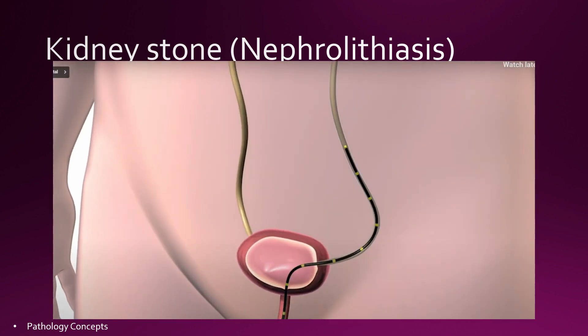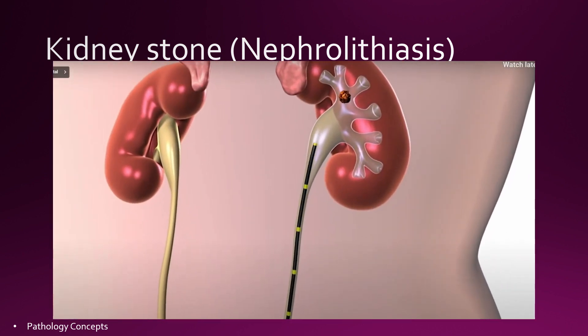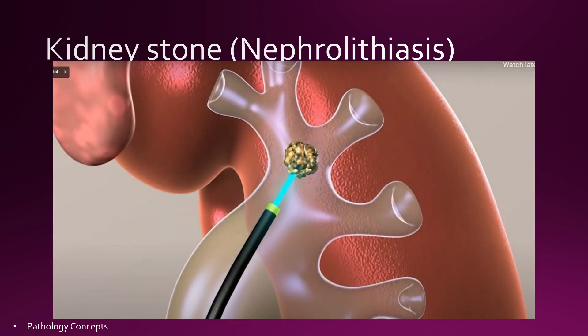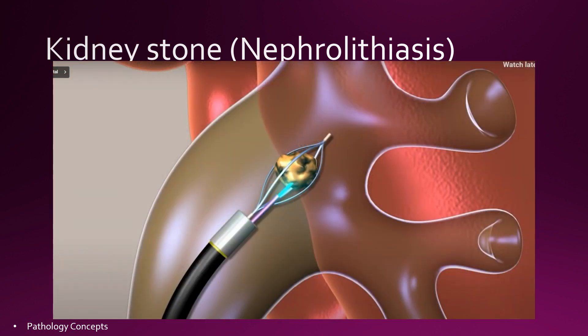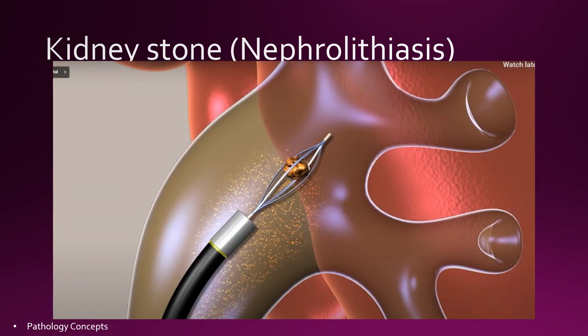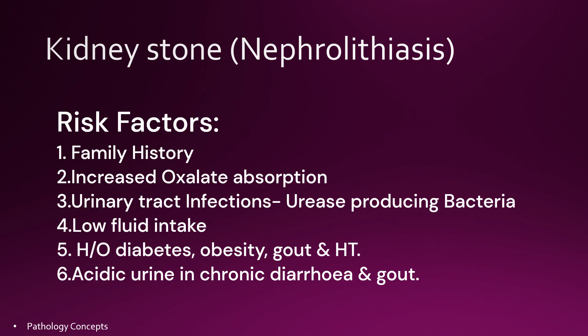Common symptoms include severe pain in the lower back, blood in urine, nausea, vomiting, fever and chills, and urine that smells bad and looks cloudy. The stone is removed by different techniques and sent for examination. The risk factors for development of kidney stones are the following: